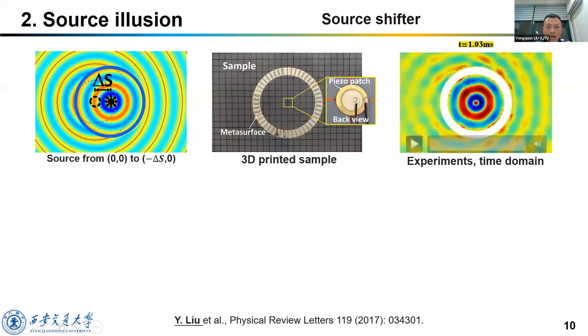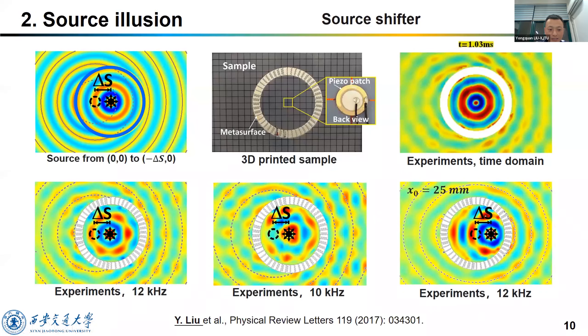Then we measure the wave propagation behavior using a laser vibrometer. This is the experimental result in the time domain. After FFT, we can get the field pattern at each frequency. Here is the result at our target 12 kilohertz, fitting very well with our target wave field.